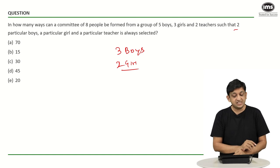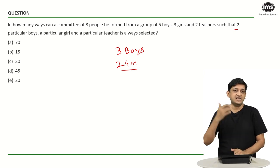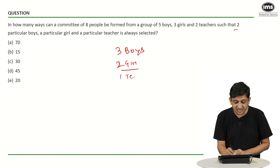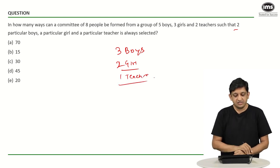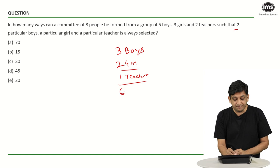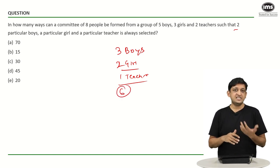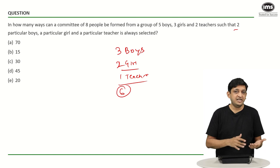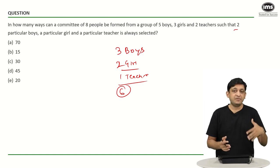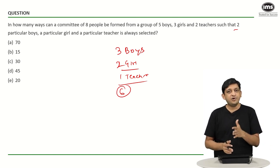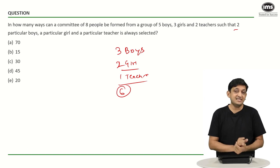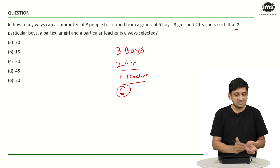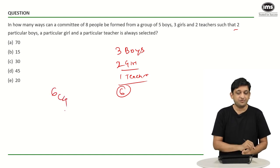We have two teachers, out of whom one particular teacher has already been selected for this committee, so we have one teacher left. That gives us a total of six people remaining. Out of these six people, we have to select four people because the committee had to be of eight people — four have already been selected. The remaining four have to be selected from these six people. In how many ways can you select four people out of six? The answer is 6C4.